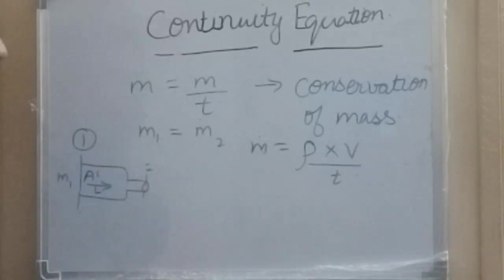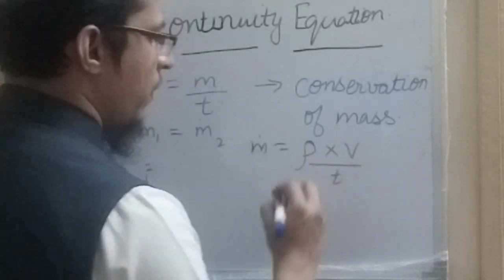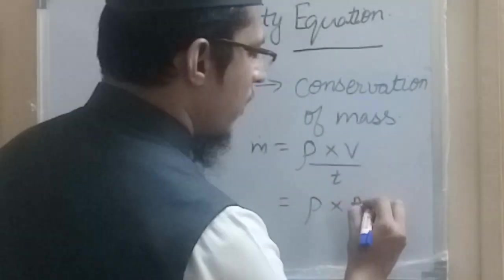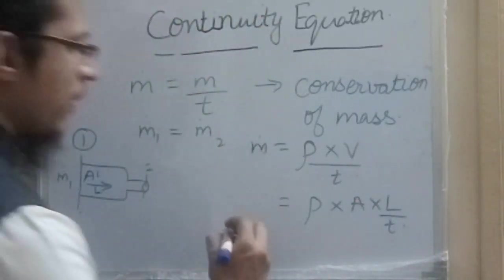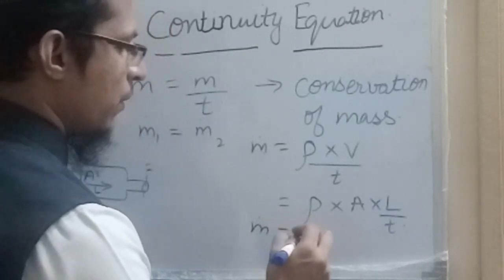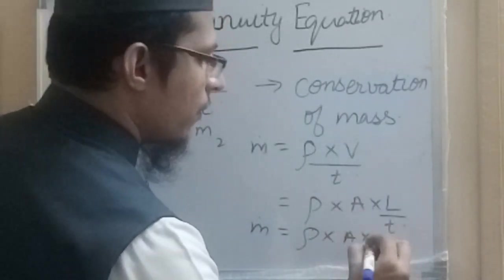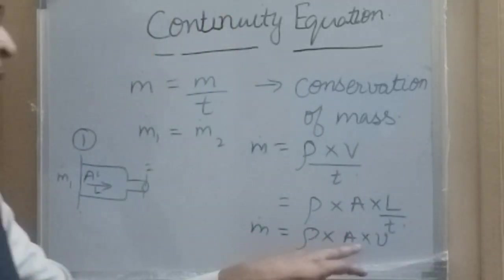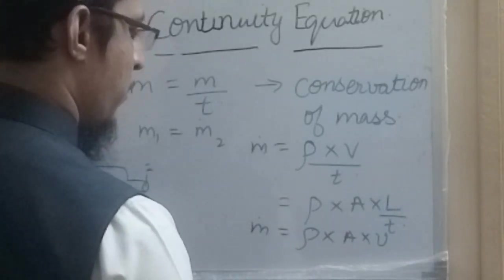volume equals area times length traversed in time t, giving m-dot equals rho times area times length over t. Since length over t is velocity, we arrive at m-dot equals rho times A times V. From m1-dot equals m2-dot, we can write rho1 A1 V1 equals rho2 A2 V2.